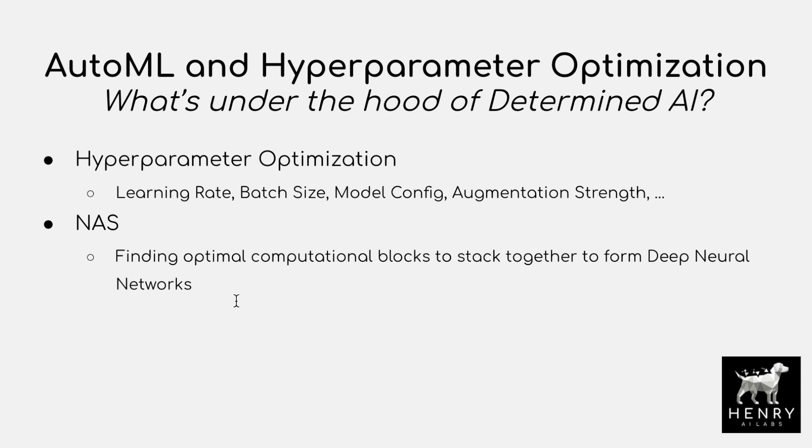When you have the GPT transformer decoder model, it's built by stacking a transformer decoder block on top of itself several times. Macro architecture search looks at how many times to stack these blocks and the overall configuration, while micro architecture search is the more fine-grained approach of finding the optimal block itself. This has a really large search space, requiring tools like Hyperband, Bayesian optimization, and evolutionary search.